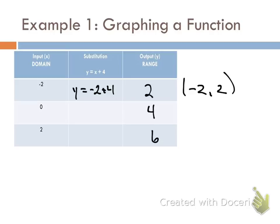Okay, now what's going to be your next ordered pair? 0, 4. What's going to be your next ordered pair? 2 and 6.